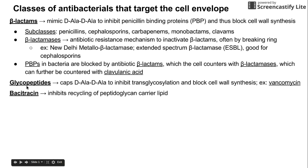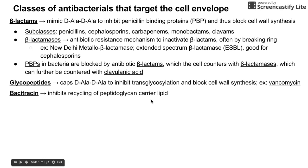Another class is bacitracin, which inhibits recycling of peptidoglycan carrier lipids. In order to bring in the components of the peptidoglycan cell wall, they are carried on the lipid membrane. Bacitracin inhibits carrying those precursors on the lipid membrane.